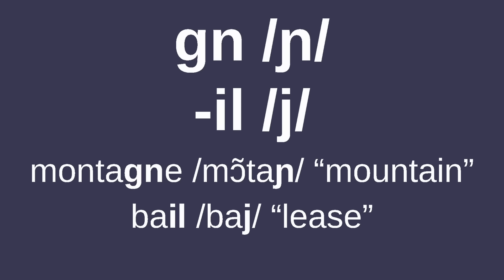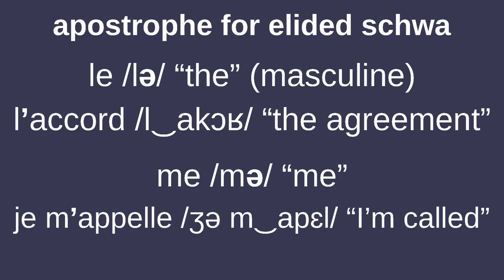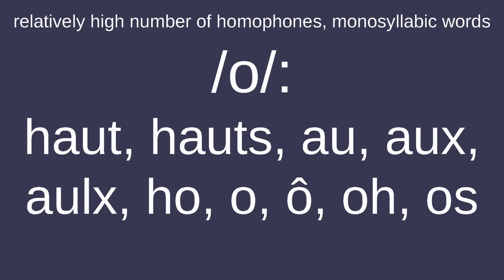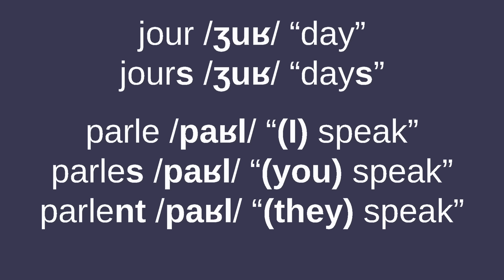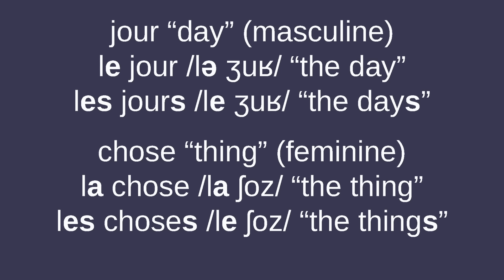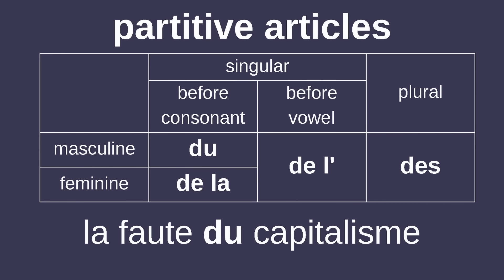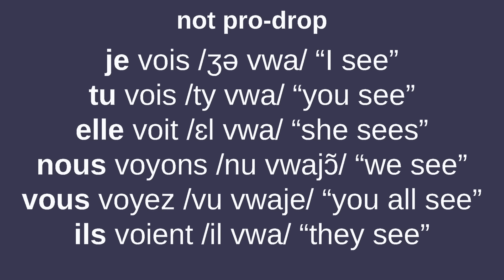GN is used for the palatal nasal. IL used to represent the palatal lateral approximant /ʎ/, a sound which shifted to /j/. Whenever the schwa in a word is elided, it's typically indicated by removing the space and putting an apostrophe where the E for the schwa used to be. French has a relatively high number of homophones and monosyllabic words compared to other Romance languages. There's a lot of inflection in French that's distinguished in spelling but pronounced the same, including plural marking on nouns and personal conjugation for verbs, although plurals are still marked on articles. Because personal inflection is often the same, French is one of few Romance languages which is not pro-drop.